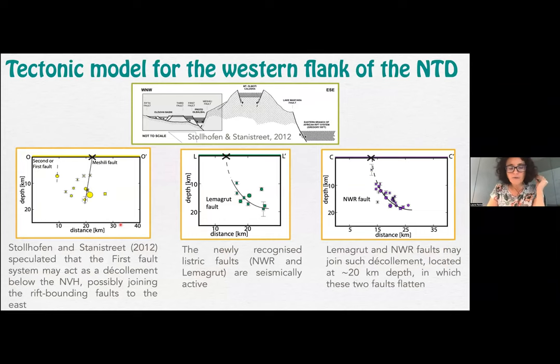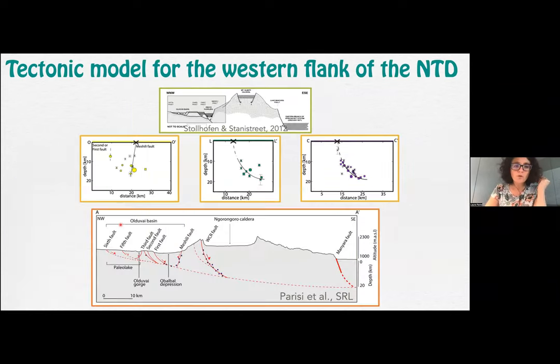Here we synthesize all the clusters. We want to propose this new tectonic model of the western flank of the northern Tanzania divergence, where we see the faults of the Olduvai Basin together with the faults present below the Ngorongoro caldera, probably because of their geometry, join in a detachment that goes below the volcanic island and joins the main fault of the rift at about 20 kilometers depth.